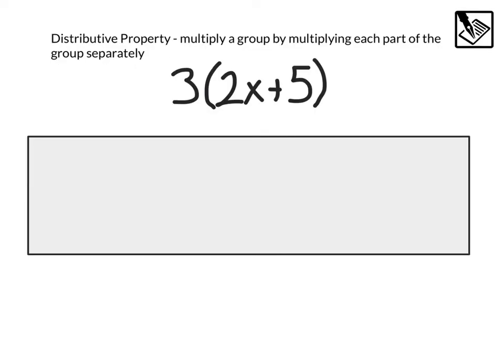One of the math tools we already talked about a little bit is the distributive property. That means you multiply a group by multiplying each part of the group separately. For example, here we have 3 times the group (2x + 5). If we multiply that 3 to the 2x, that's going to give us 6x. Then we multiply that 3 to the 5, that's going to give us plus 15. Distribution is something that comes in handy when solving definitely.